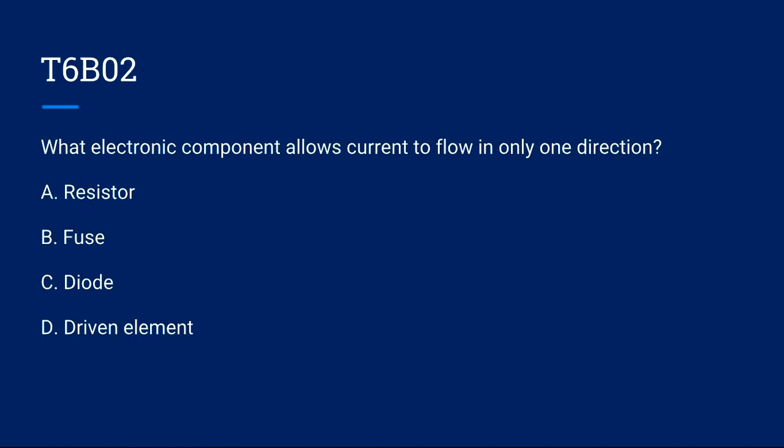T6B02: What electronic component allows current to flow only in one direction? A, resistor. B, fuse. C, diode. Or D, driven element? The correct answer is C, diode.